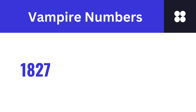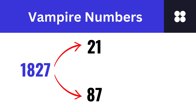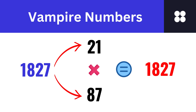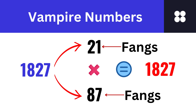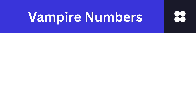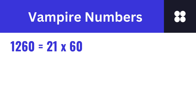Take the number 1827. Can you find two numbers whose product is 1827 and whose digits when rearranged form the same number 1827? It's a fascinating puzzle that showcases the uniqueness of vampire numbers. 1827 can be expressed as 21 multiplied by 87. Here, 1827 is expressed as 21 multiplied by 87, and they have the same digits on both sides. Rearrange the digits 1827 to get 21 and 87.